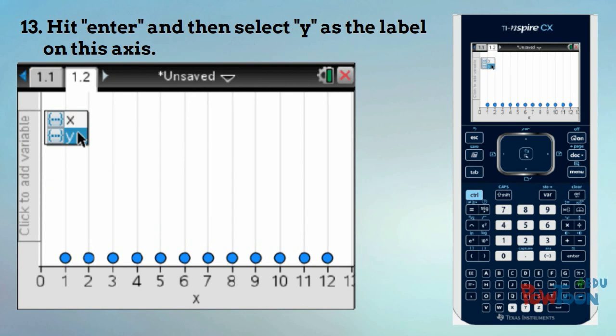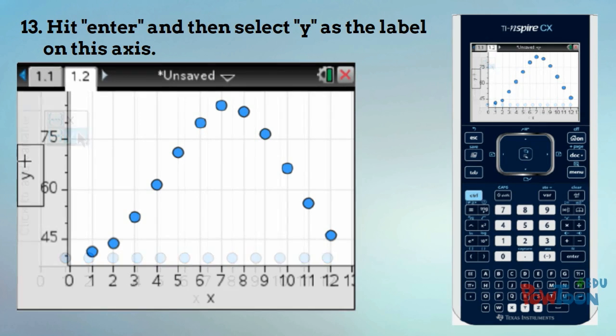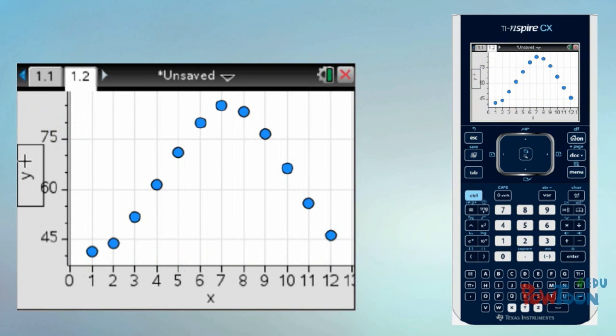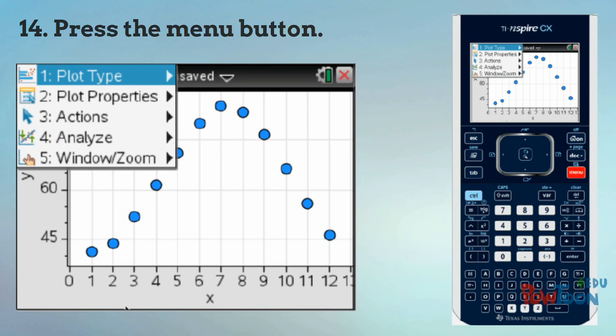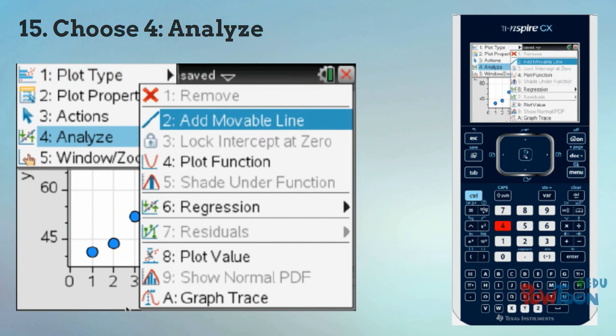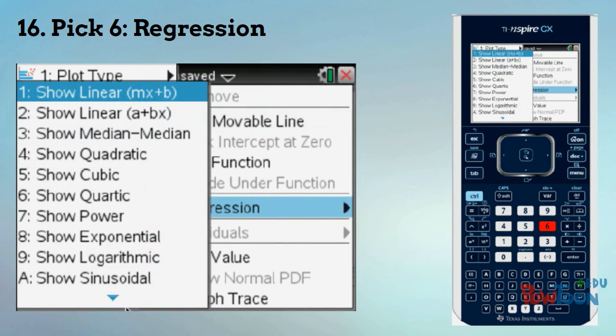You should see a parabolic shape appear with your data, but it doesn't tell you the equation yet, so this is what you do. Hit menu. Choose 4 for analyze, 6 for regression, and 4 for show quadratic.